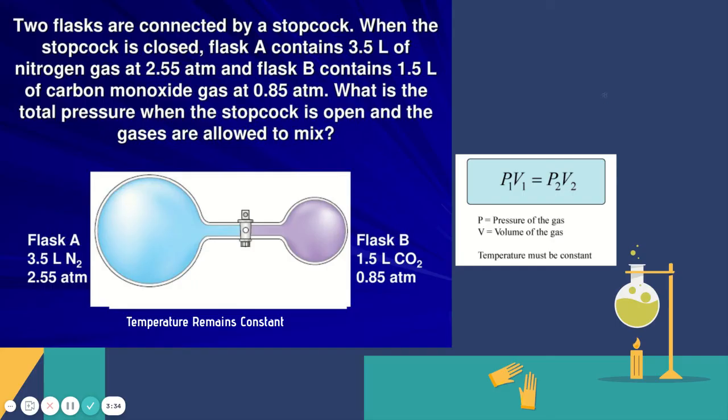So what if something else is changing as well? You are going to see this kind of problem. I'm going to talk about it a little conceptually here but I will perform a couple of these calculations in the example problems in your notebook for you so don't worry those are coming. But here it says two flasks are connected by a stopcock, that's this thing here in the middle and you can see that it's closed. It says when the stopcock is closed flask A contains 3.5 liters of nitrogen gas at 2.55 atm so that's this blue side.